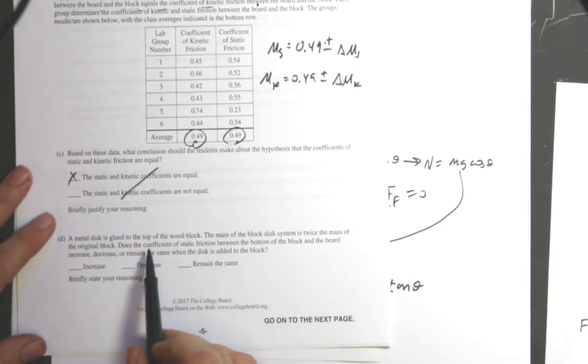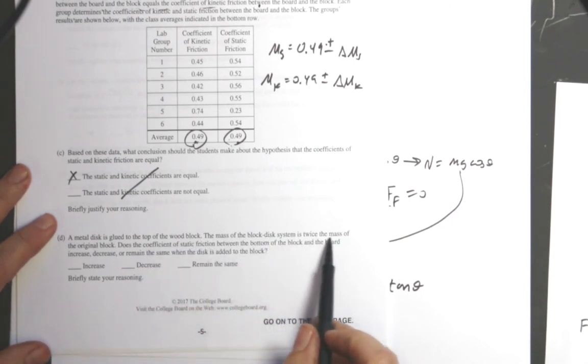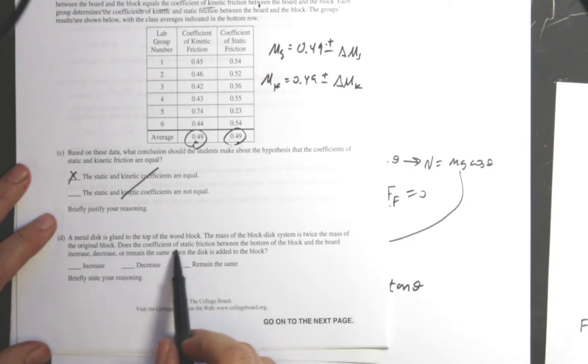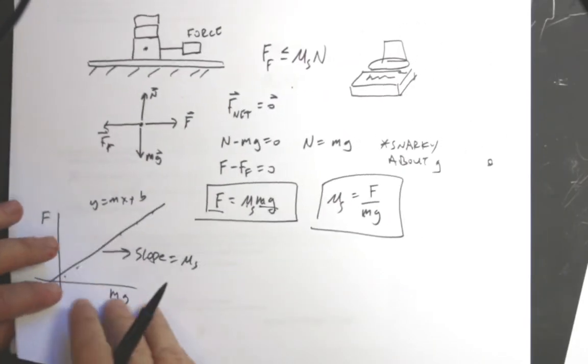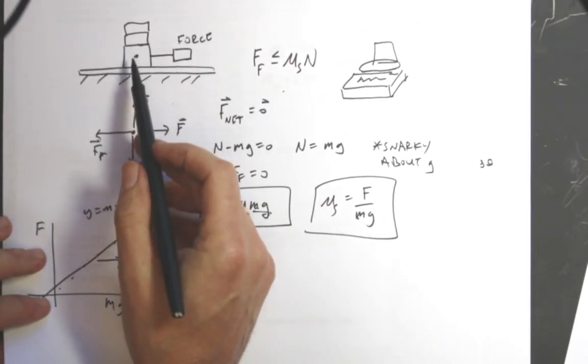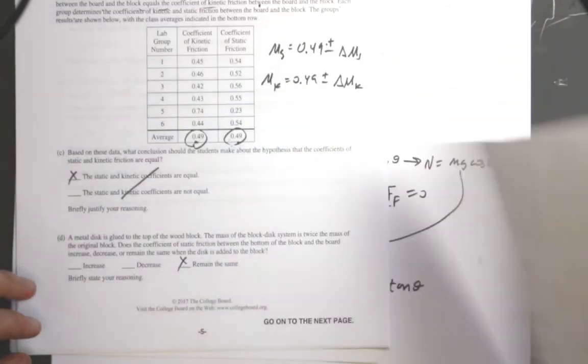A metal disc is glued to the top of the wood block. The mass of the wood disc system is twice the mass of the original block. Does the coefficient of static friction between the bottom block and the bottom board increase, decrease, or remain the same? Remain the same. So I did that right over here. If you increase the mass then the coefficient of friction stays the same.